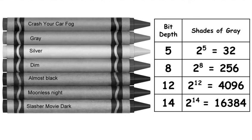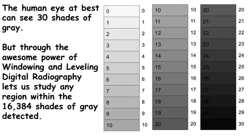Our eyes can almost achieve a bit depth of 5 — about 30 shades of gray. With film screen systems, we could see about 30 shades of gray, and then we were done. But digital radiography files are often stored with a 14-bit depth, meaning 16,384 shades of gray. With digital, we can window and level — zooming in on any region of that 16,384 shades of gray and expanding it to display from bright white to black for our eyes. This ability to interrogate any region of contrast by windowing and leveling is one of the huge advantages of digital radiography.